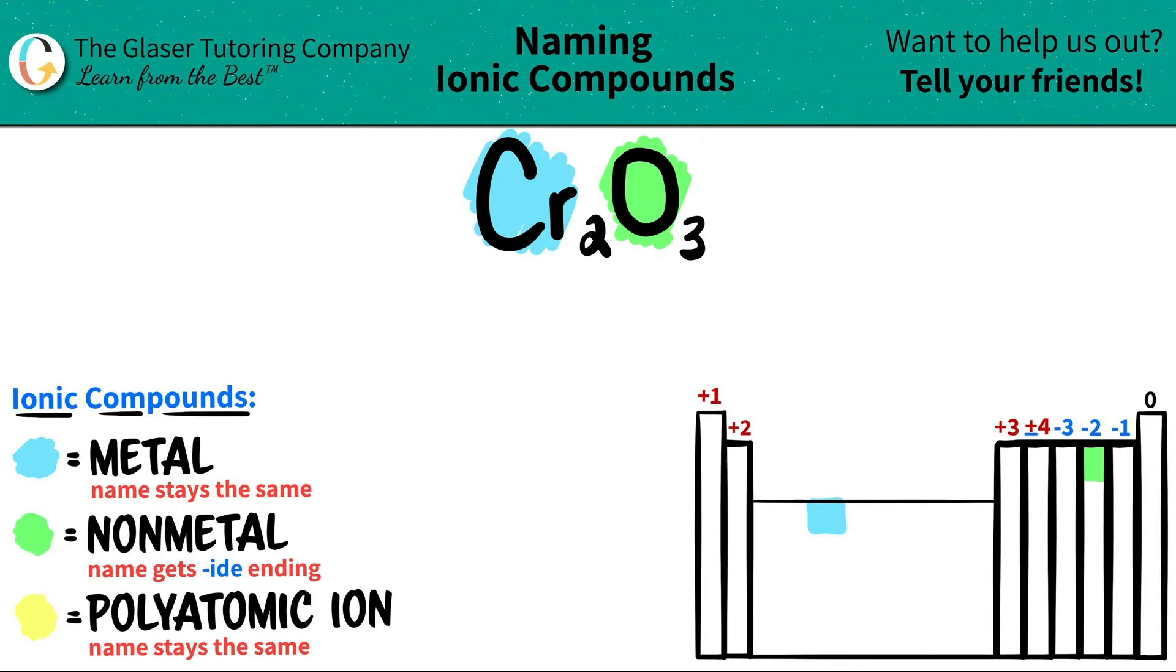Now we have the two different elements. Let's name them out. So the metal name always comes first. It's literally the first one that's stated in this compound, and that name always stays exactly the same. So chromium would just stay chromium.